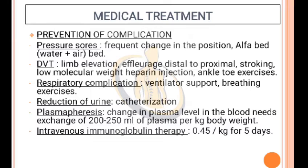Respiratory complications are managed with ventilator support and breathing exercises. Urinary retention is managed with catheterization. Plasma pheresis involves exchange of 200 to 250 ml of plasma per kg body weight. Intravenous immunoglobulin therapy is given at 0.4 g per kg for 5 days.